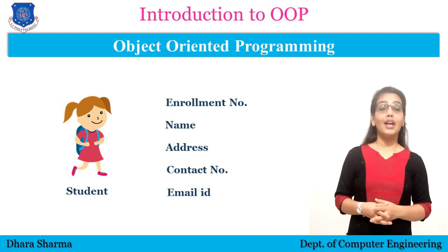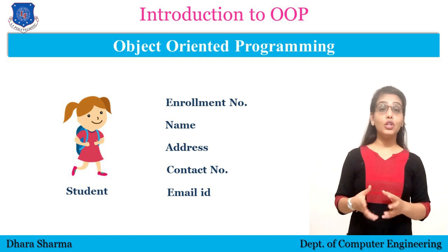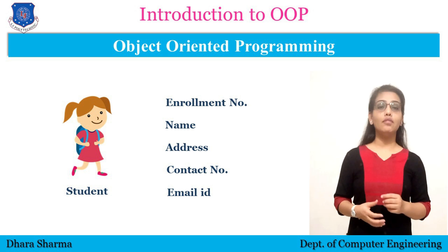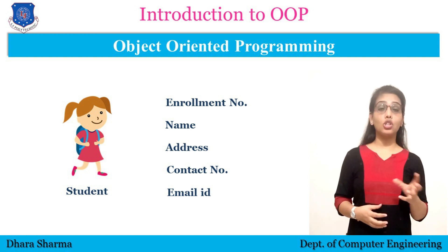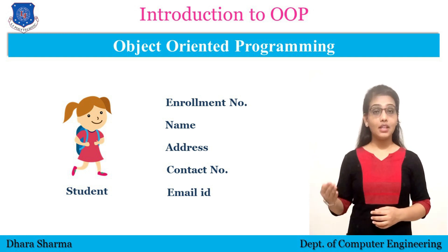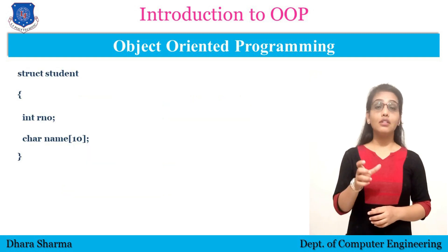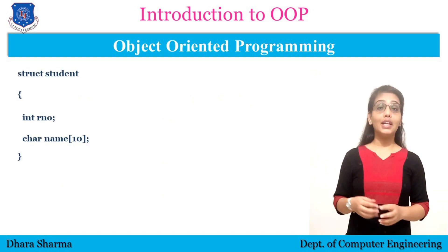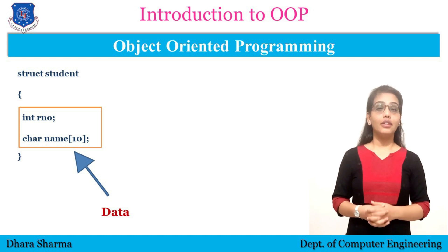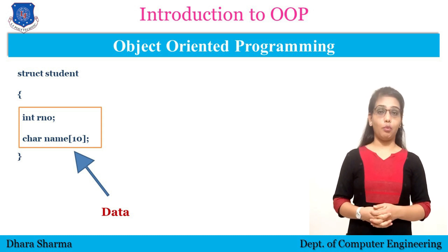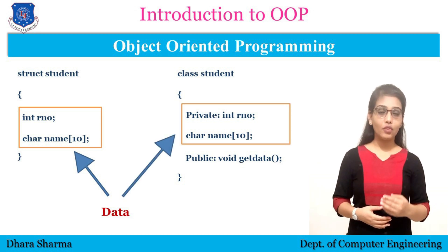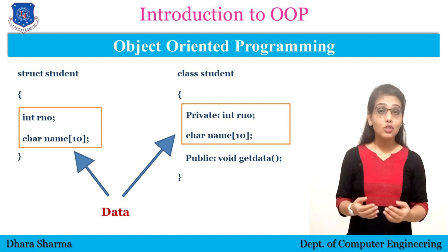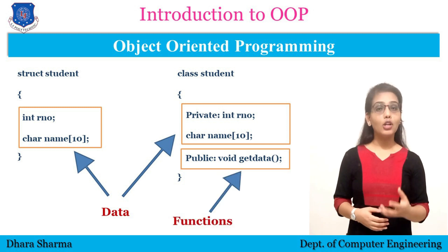In C programming language, we used to write the whole code into the main function. Here in object-oriented programming language, we have a structure called class. As in C we used to create a structure for declaring multiple types of data, here in OOP we create a class in which we can declare multiple types of data as in a structure, as well as we can define functions also.